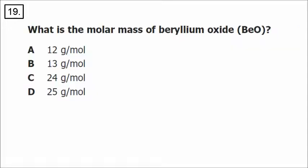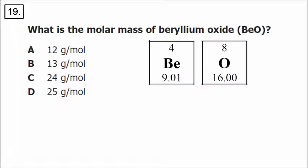Number 19: looking on the periodic table, beryllium has a mass of around 9 and oxygen has a mass of 16. So 9 plus 16 is 25. The correct answer is D.